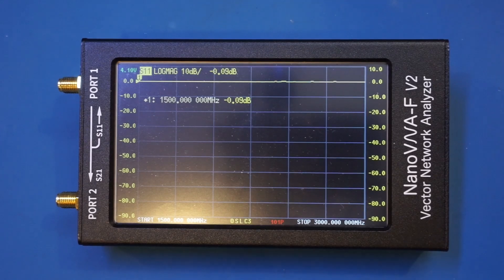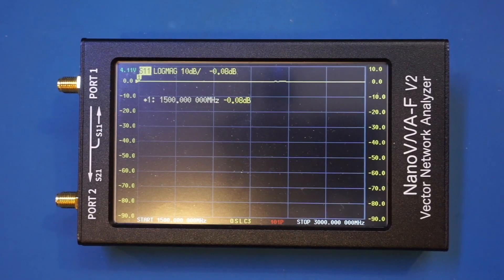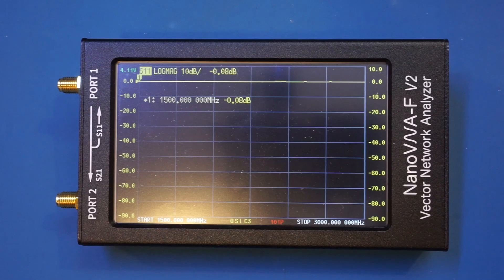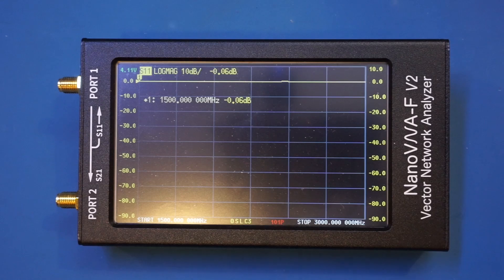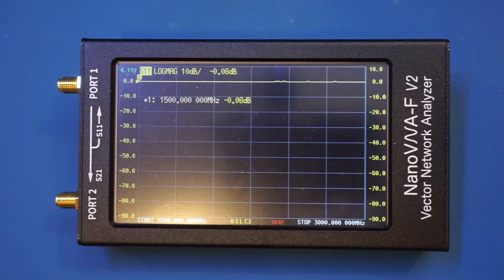That was the firmware update. Now I want to check another item viewers brought to my attention from the last review video. When the NanoVNA was in signal generation mode, the output frequency seemed off when measured on my spectrum analyzer. At first, I thought it was a firmware issue, but further testing showed the output frequency was actually accurate. It was just the wide resolution bandwidth that was set as default at 3 MHz.